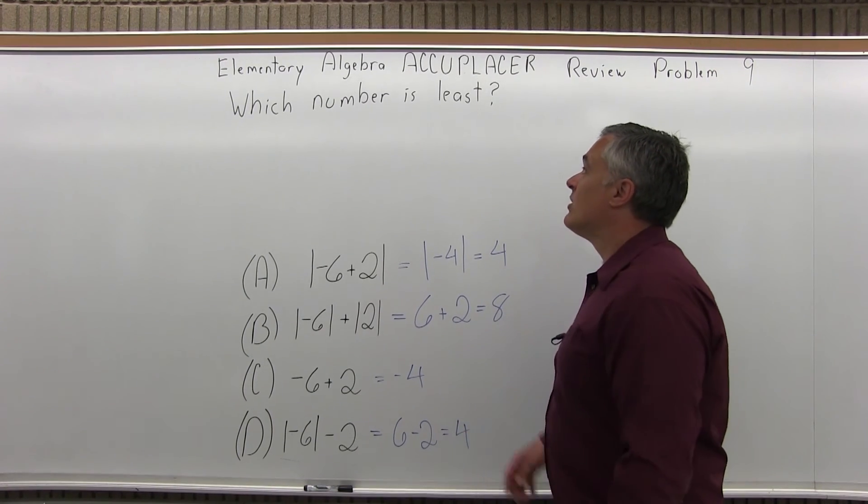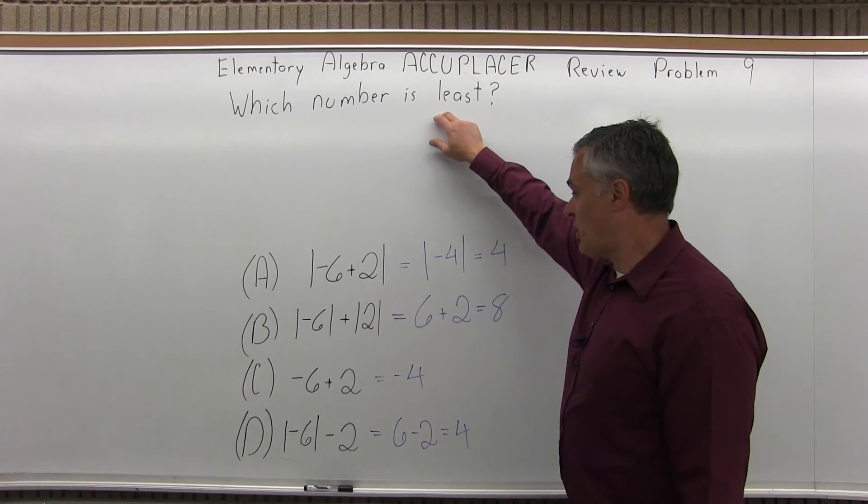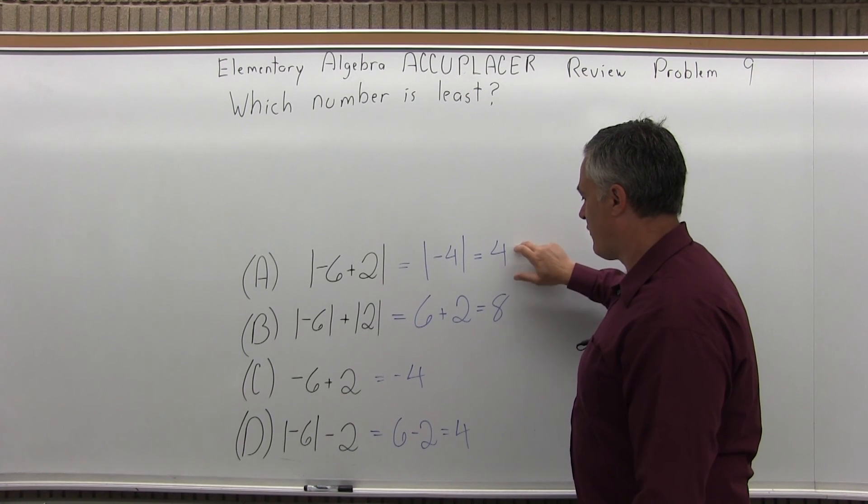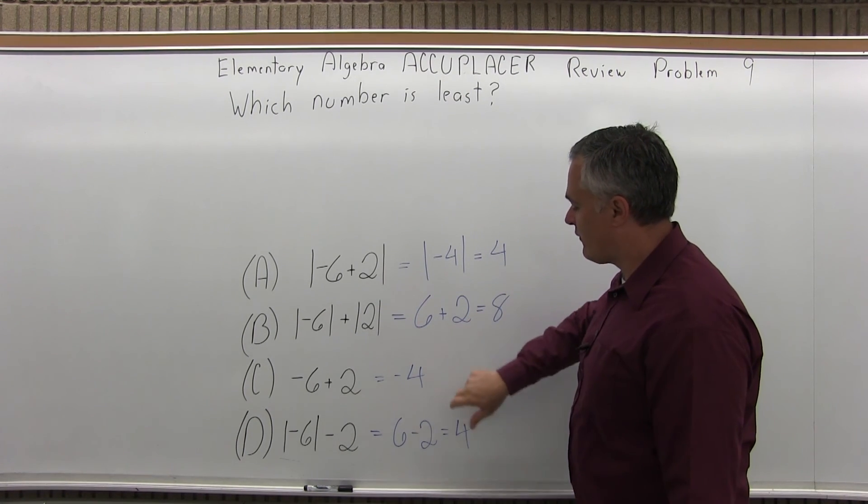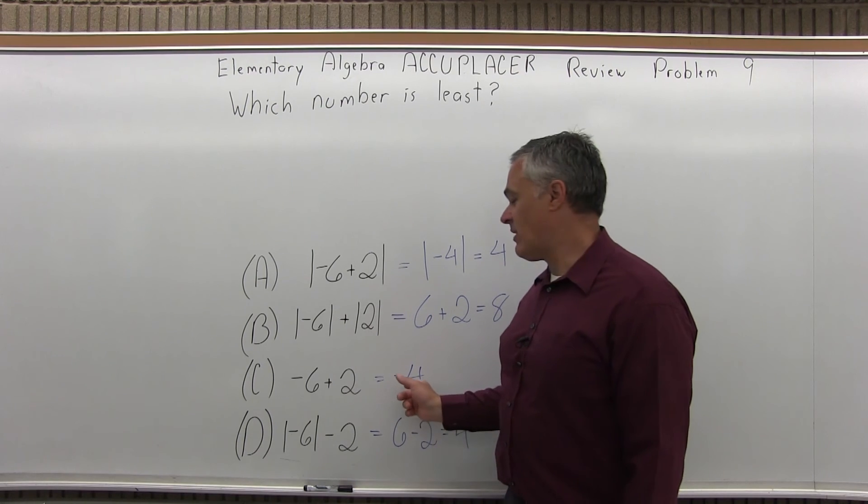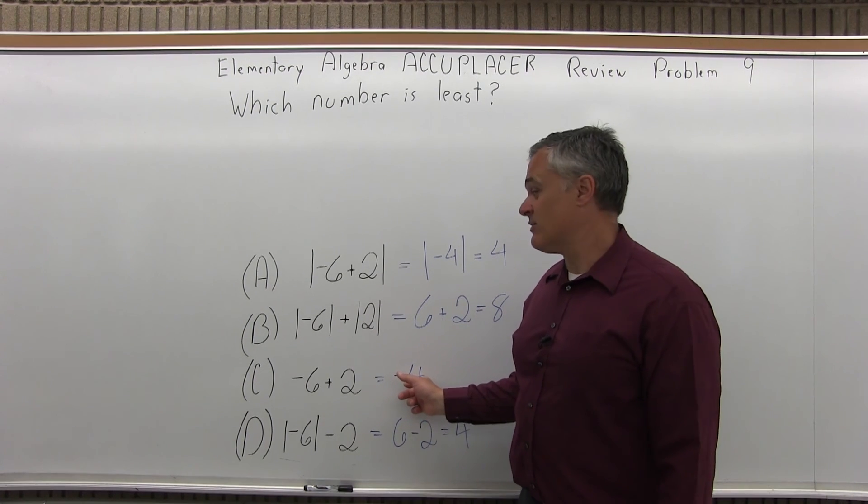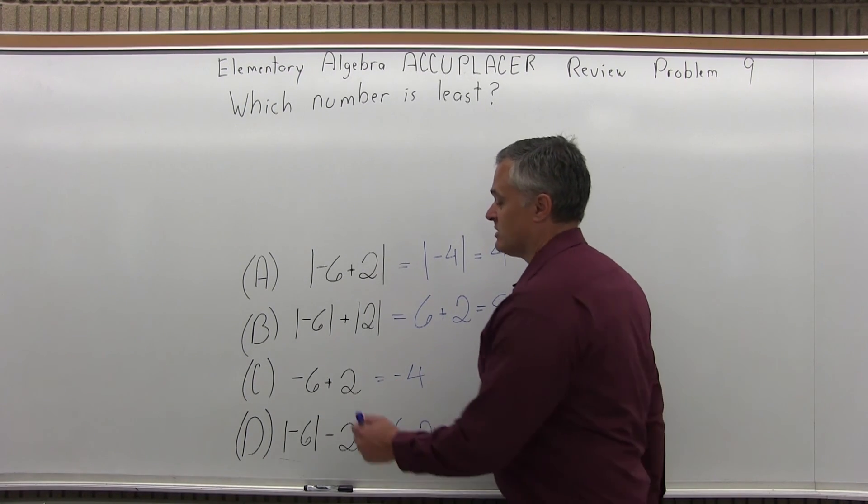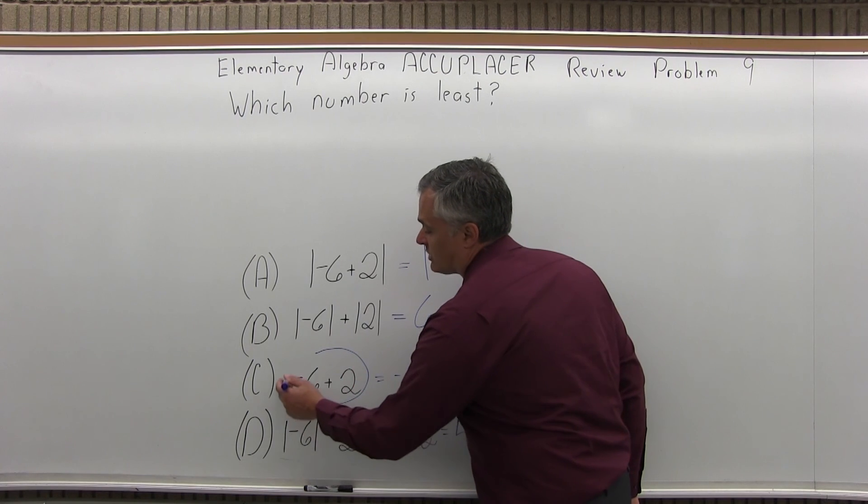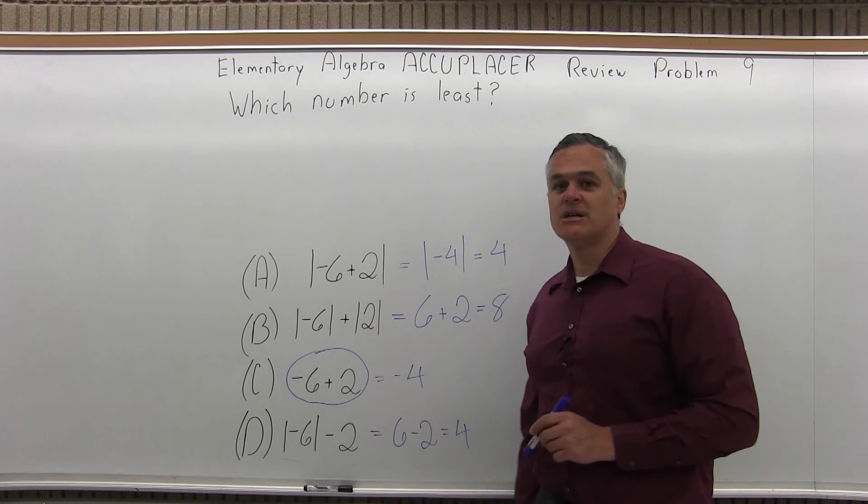Now again going back to the question it says which number is the least or smallest. Our options are 4, 8, negative 4, positive 4. Well the negative 4 is the only negative one, it is the least, it's clearly the smallest. So the answer which one is the least, it's option C.